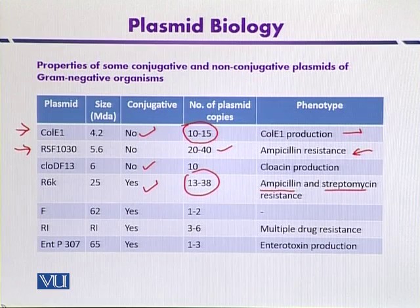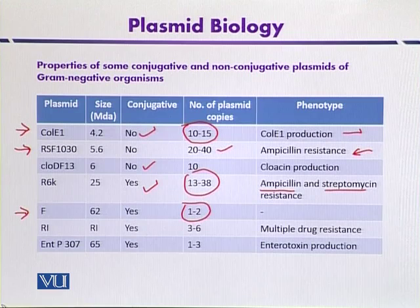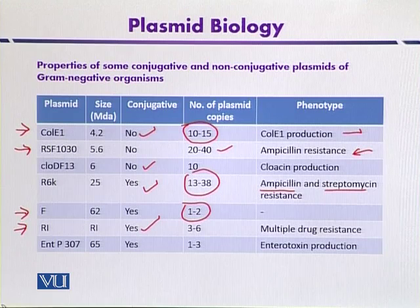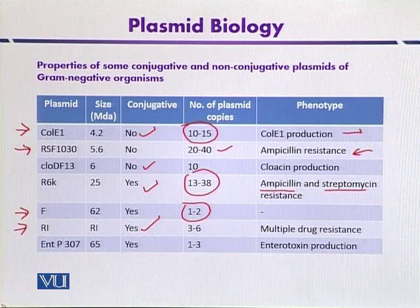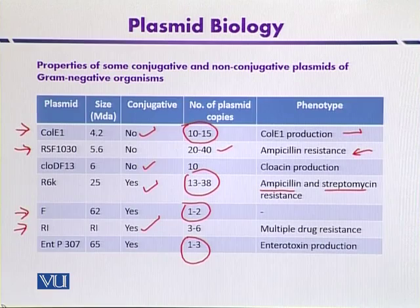A very famous example is the F plasmid, which can mediate conjugation and has a low copy number. R1 is also a conjugative plasmid that can confer multi-drug resistance, resisting a variety of antibiotics. Finally, ENTP307 is also a conjugative plasmid with a copy number of 1 to 2 or 3, and it produces a toxin such as enterotoxin, encoded by plasmid-encoded genes.